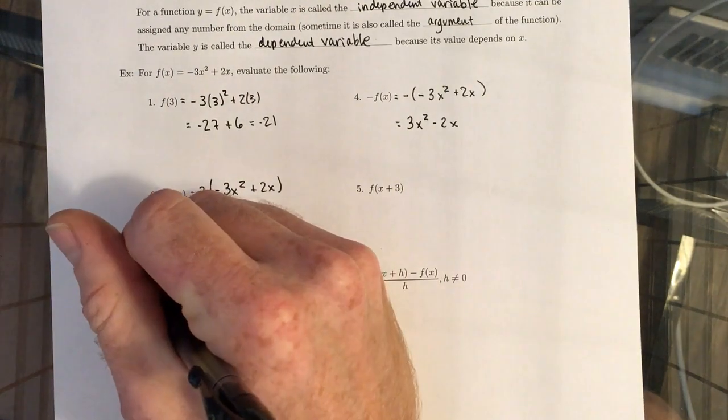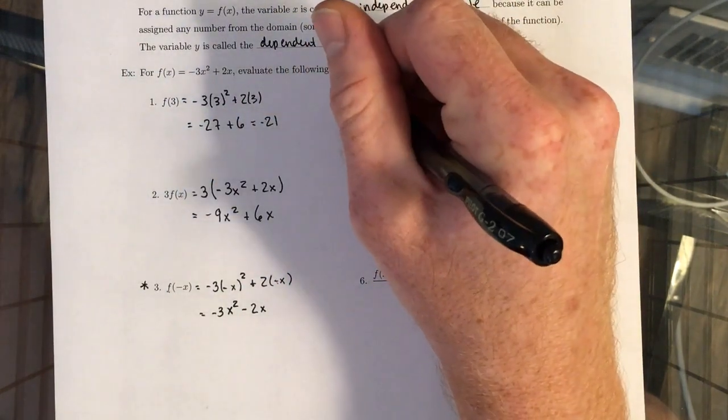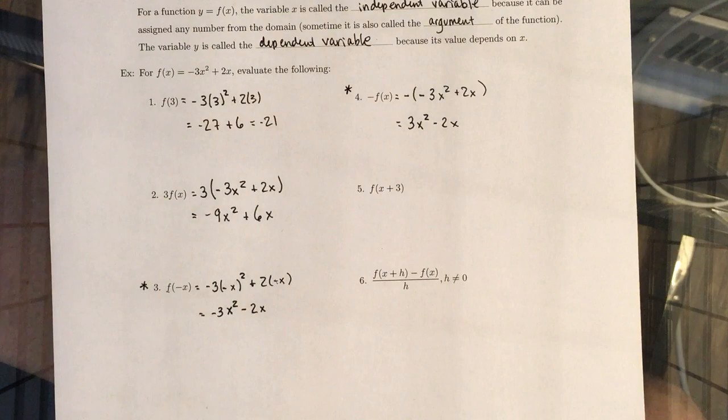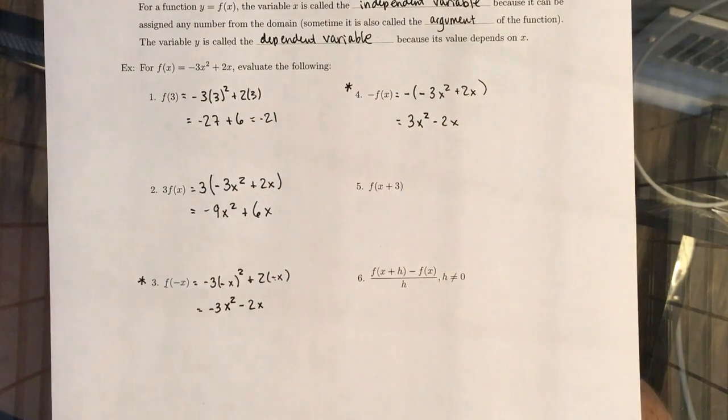These will become important later in this chapter, where you put a negative either next to the X or right outside the function. Because if certain things happen, then the function itself is fairly nice.